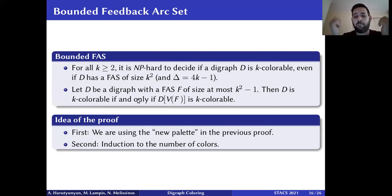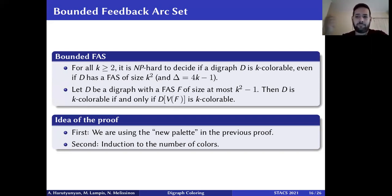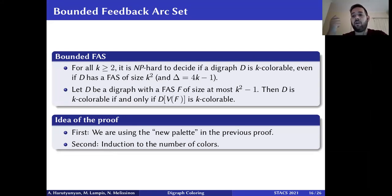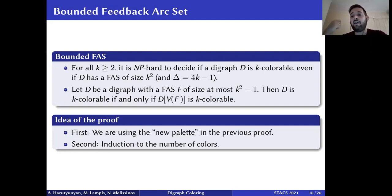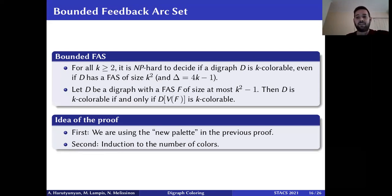To summarize these dichotomies: for directed feedback vertex set of size k, the graph is always (k+1)-colorable and it is NP-hard to decide k-colorability. For feedback arc set of size k², k-coloring is NP-hard, but for size k²−1 the problem becomes tractable. Most of these results are hardness results, requiring very restricted cases for tractability.